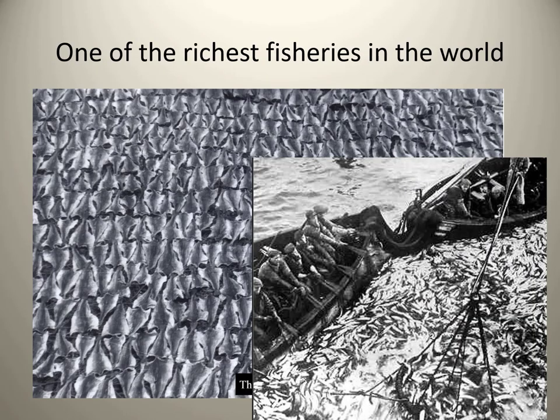Cod truly was one of the richest fisheries in the world. It's a large, bottom-dwelling fish that forms massive schools, swimming with mouths open and devouring everything. One fully mature female can produce up to 9 million eggs per year — extremely prolific. It's no wonder that when John Cabot explored the North Atlantic in 1497, his crew just dropped baskets over the side of their boats to fish.